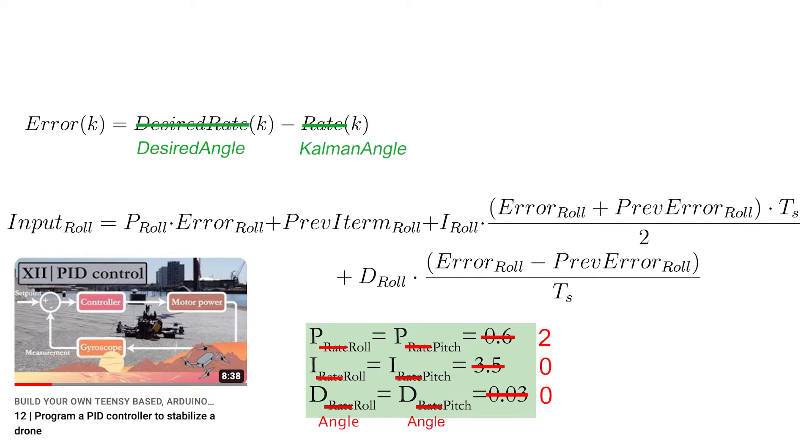Second, the P, I and D values change as well and are equal to 2, 0 and 0. We will explore the reason for these values in one of the next videos.